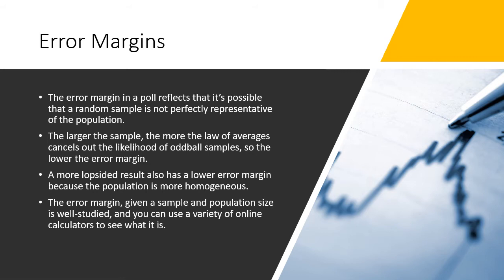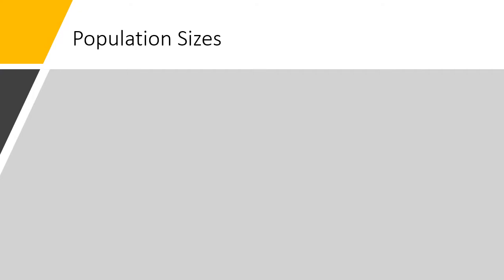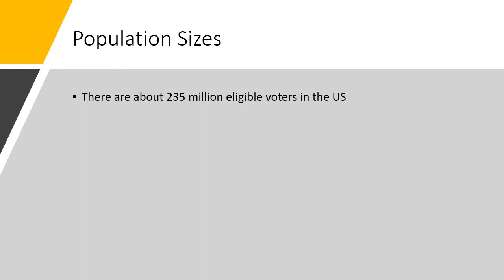Let's look at some plausible examples regarding population size. There are approximately 235 million eligible voters in the United States — that's an estimate from around 2018. The largest category of residents not eligible to vote is children. About 158 million people actually voted in the 2020 presidential election, which was a significant turnout increase from previous elections. You'll notice there's a big difference between those who are eligible to vote and those who actually voted.